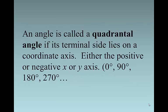An angle is called a quadrantal angle if its terminal side lies on the coordinate axis. Either the positive or negative x and y axis. These are your 0 degrees, 90 degrees, 180 degrees, 270 degrees, 360 degree angles. There's an infinite number of them, but they are called the quadrantal angles.